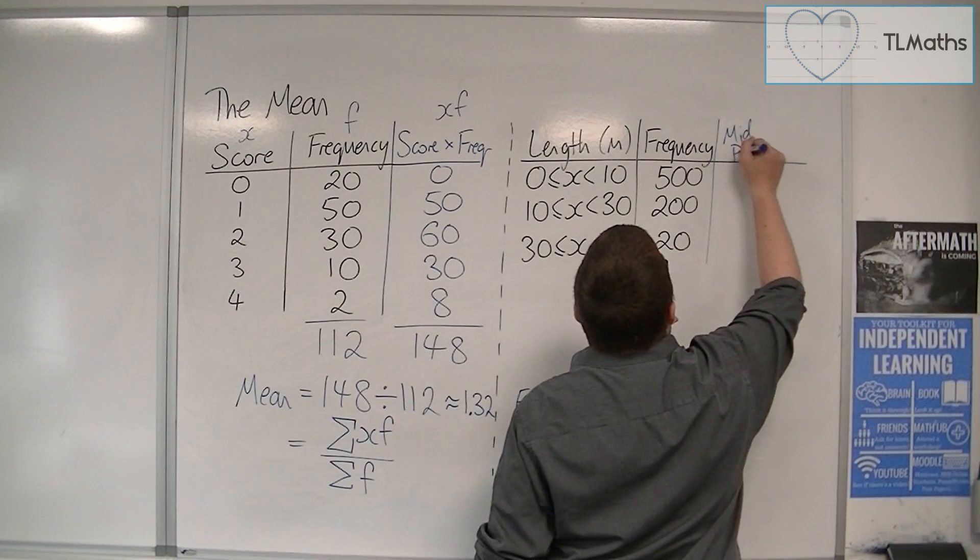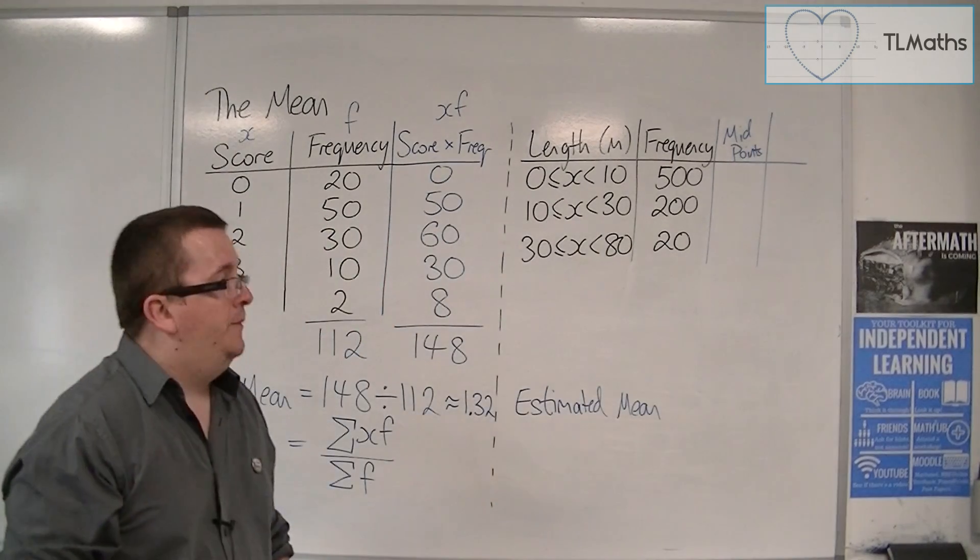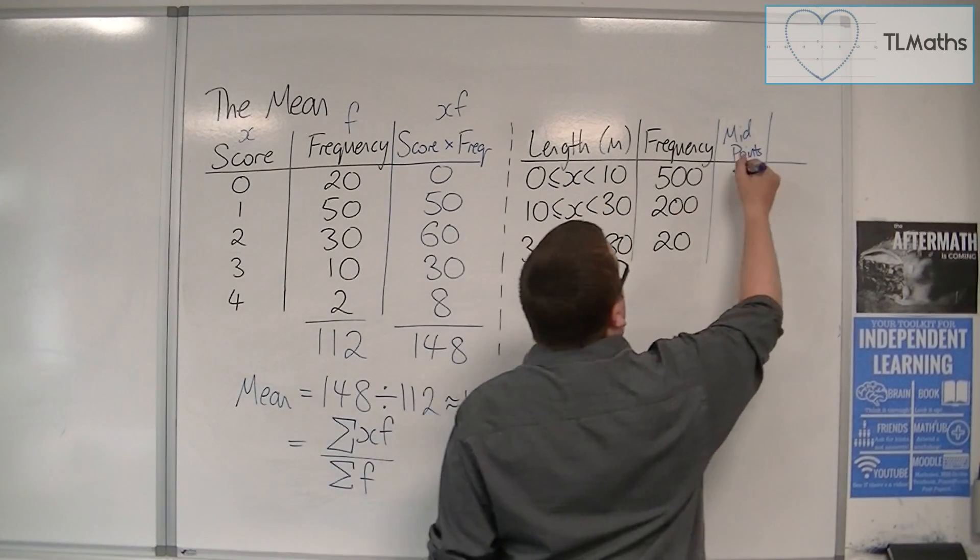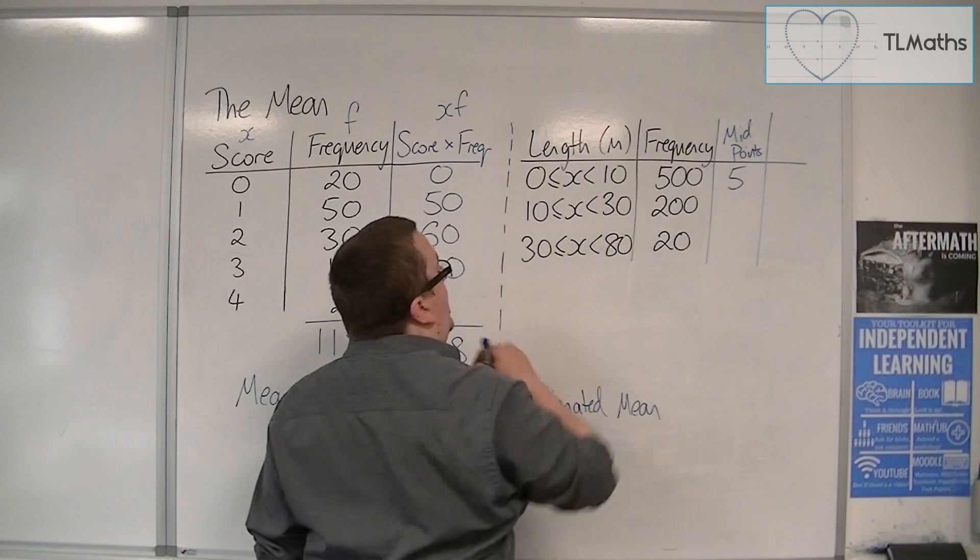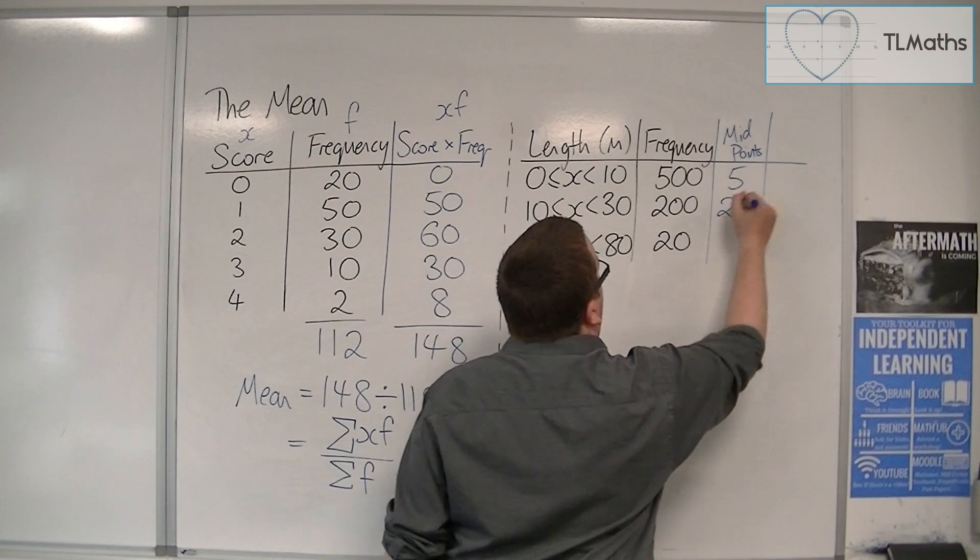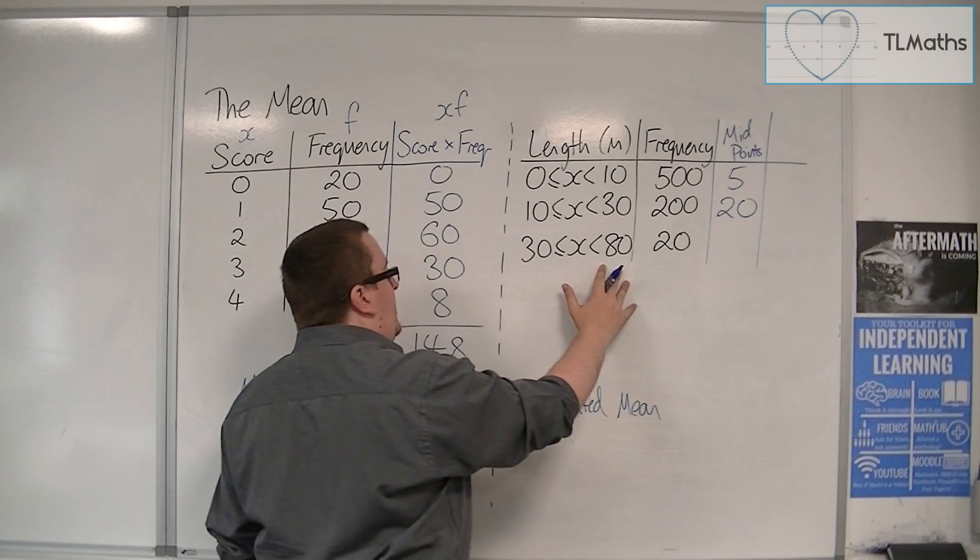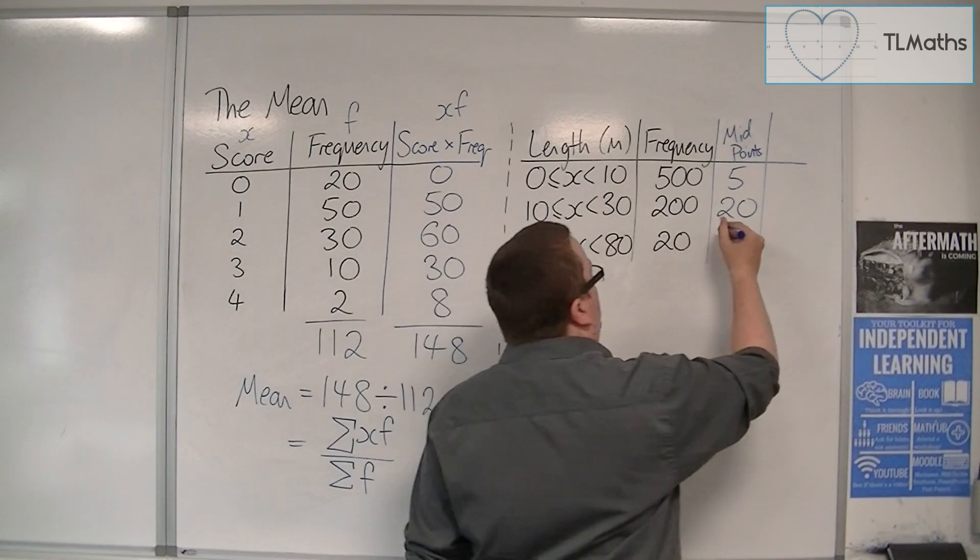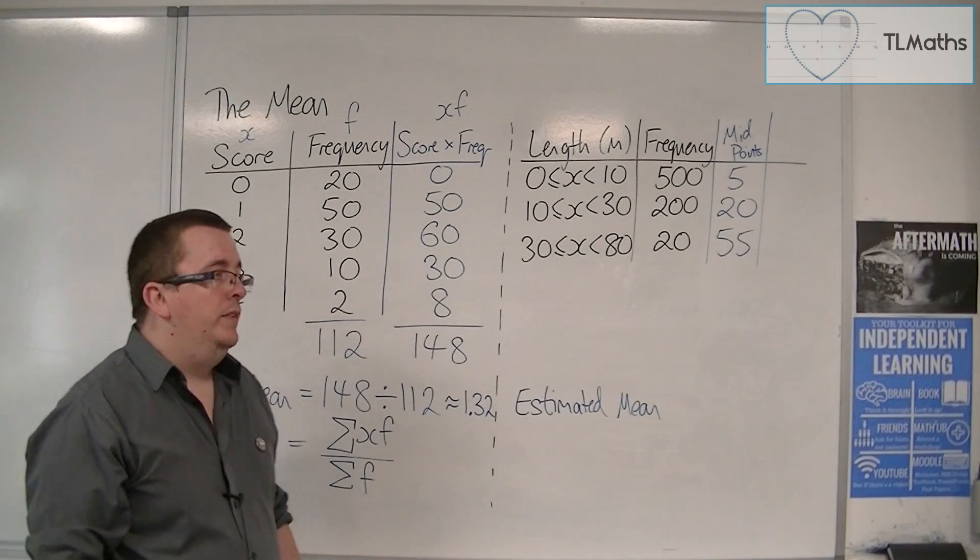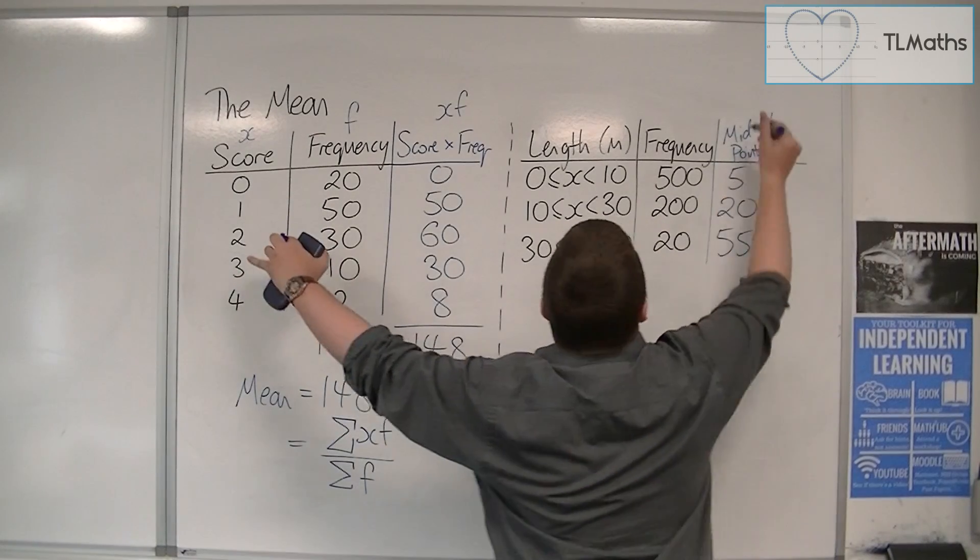So that's why we find, first of all, the midpoints. Now, the midpoints are just the middles of the groups. So the middles, in this case, the first one would be 5, the middle of 0 and 10. Now, the next one is the middle of 10 and 30, that's 20. So that would be our second midpoint. And the halfway point between 30 and 80 is 55, and that would be our third midpoint.